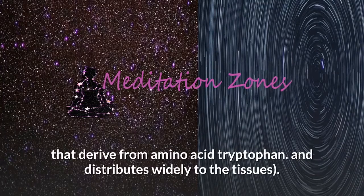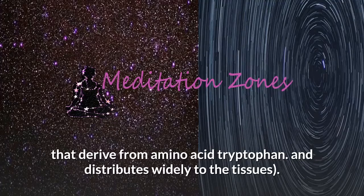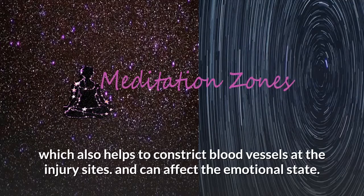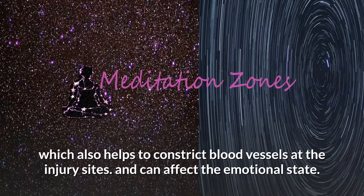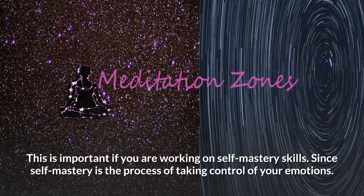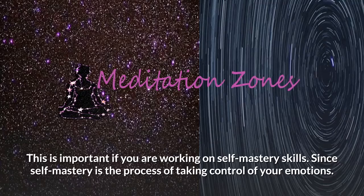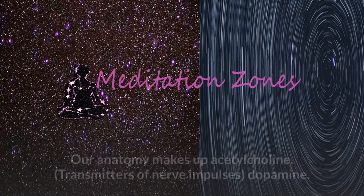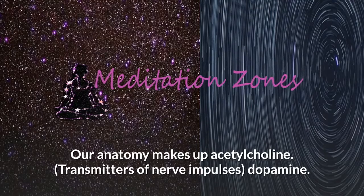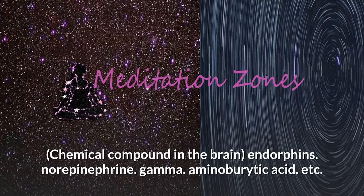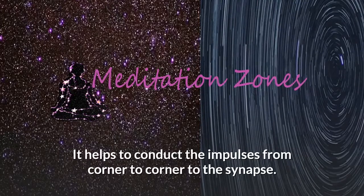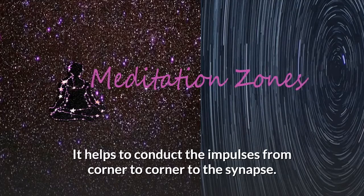Our anatomy makes up neurotransmitters. These transmitters act to produce serotonin — chemicals derived from amino acid tryptophan — distributed widely to the tissues, which also helps to constrict blood vessels at injury sites and can affect the emotional state. This is important when working on self-mastery skills, since self-mastery is the process of taking control of your emotions. Our anatomy also makes up acetylcholine transmitters of nerve impulses, dopamine, endorphins, norepinephrine, and gamma-aminobutyric acid, among others.